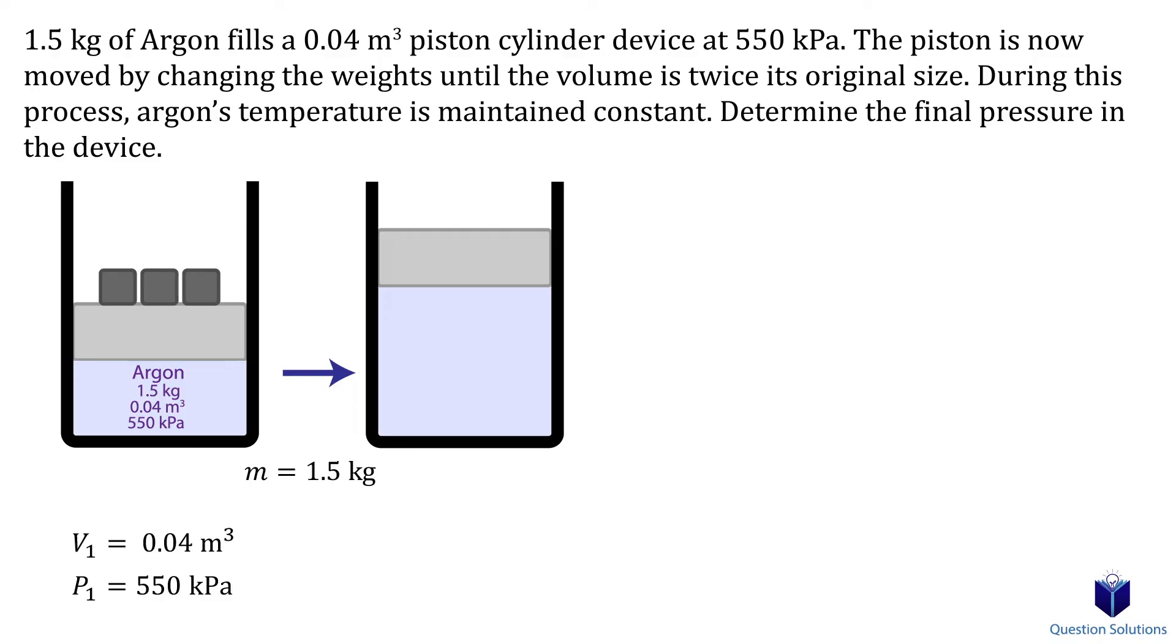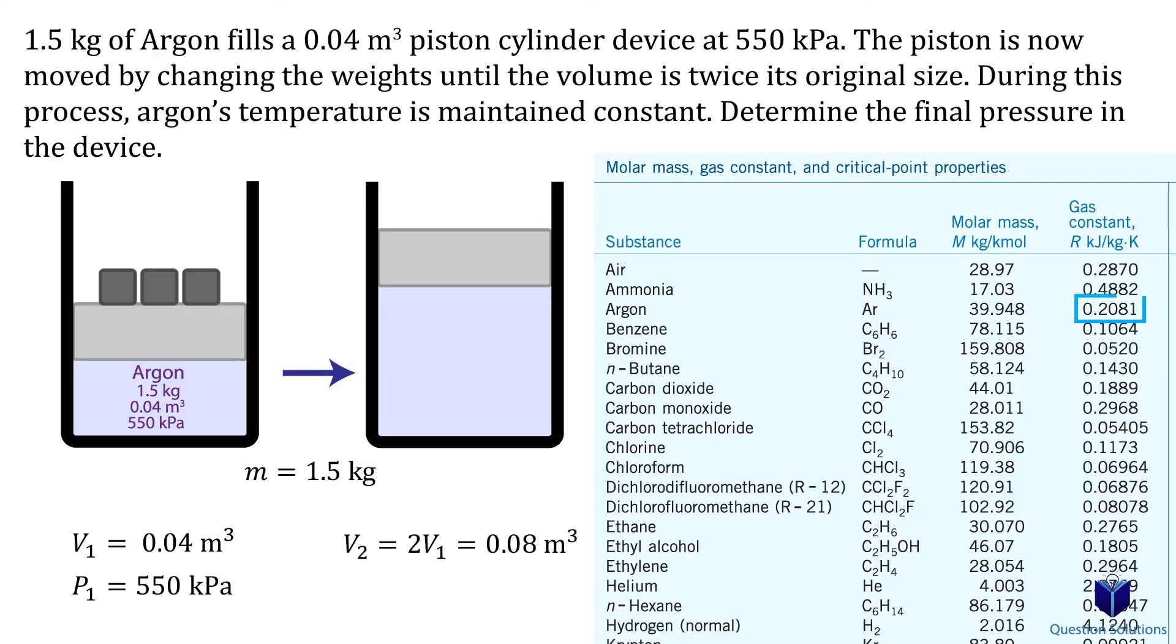After the process change, our volume is twice the original. So we need to multiply our initial volume by 2 to get the final volume. Let's also find the gas constant of argon.